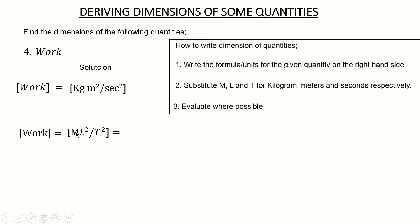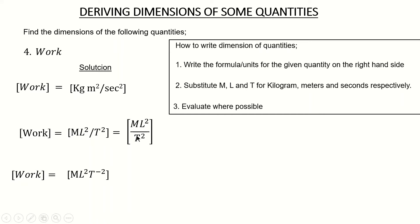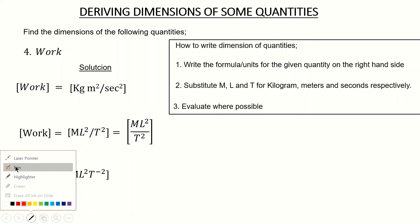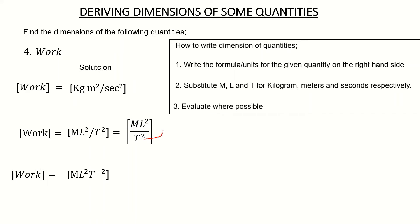Kilograms is capital M, meter squared is L squared, seconds squared is T squared. So we can write this as ML² over T², which is the same as ML²T⁻². When T squared comes up from the denominator it becomes T to the negative two. So ML²T⁻² is the dimension for work — my final answer.